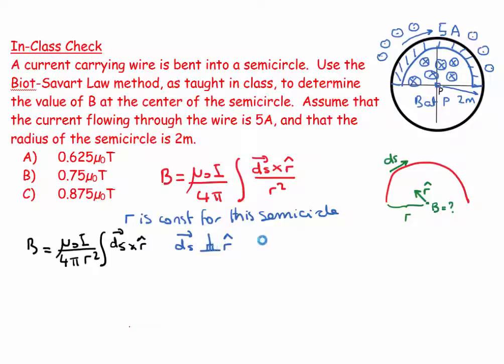And what that means is if I write this down in the magnitude form, ds, r̂, sine the angle between, that sine the angle between is the sine of 90, which equals 1, because that equals 90 degrees.